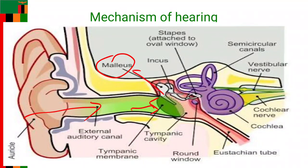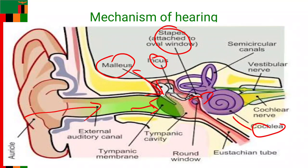The first bone is the malleus — the sound waves hit the malleus, then it will also hit the incus and also the stapes. The bones in the middle of the ear will then amplify that particular sound — in other words, they increase the sound vibrations and send these sound vibrations to the cochlea.